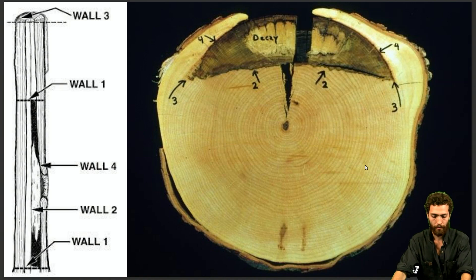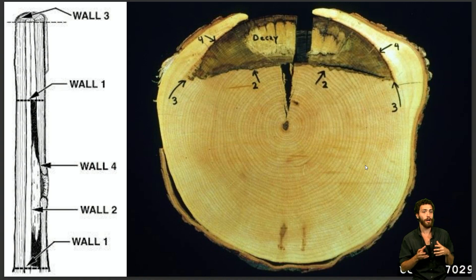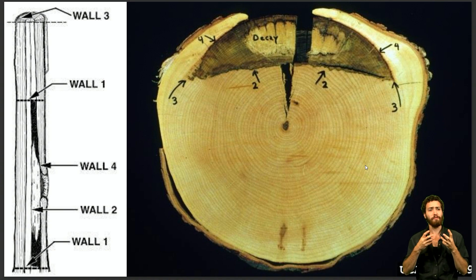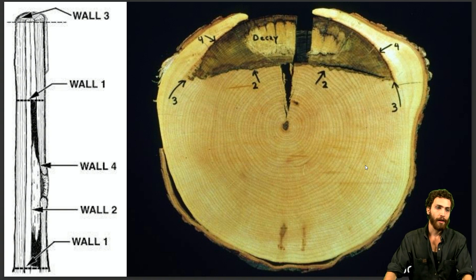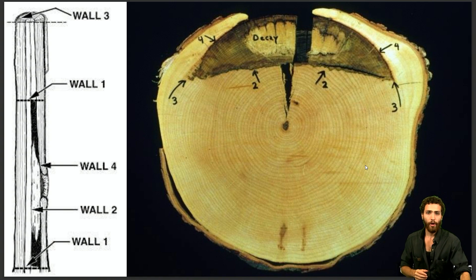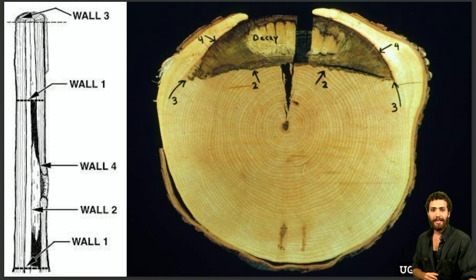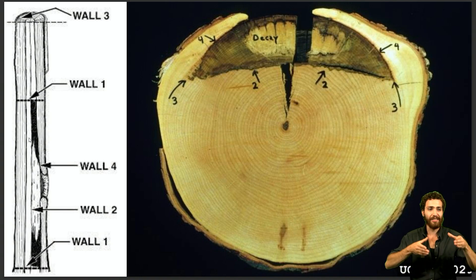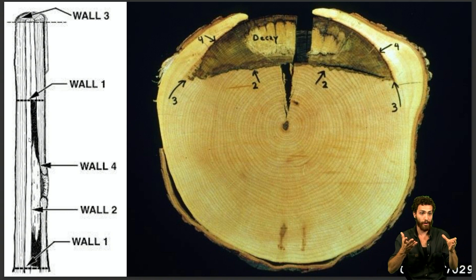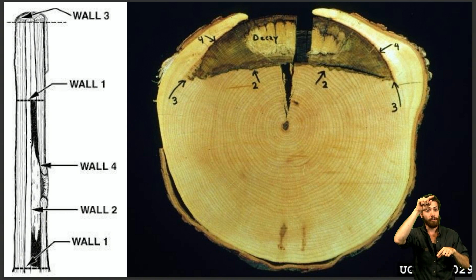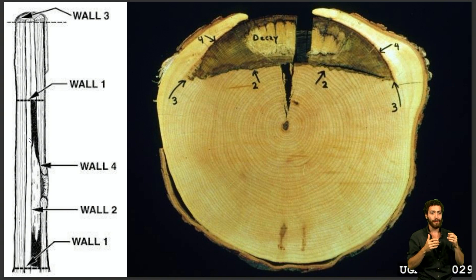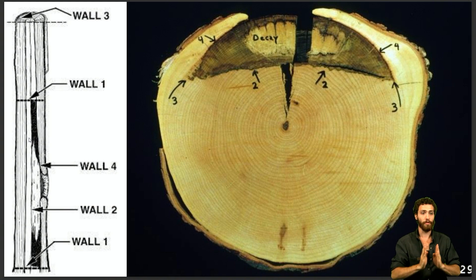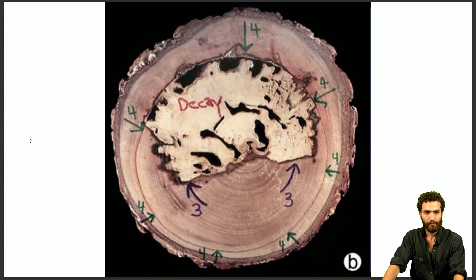Walls two and three will often fail slowly. Some trees are very strong compartmentalizers, while others are known for having walls that very frequently fail. Wall one is the easiest to fail, which is why decay typically stretches much further vertically than it does horizontally. Decay is often confined to a narrow space inside the trunk but stretches very far vertically up and down, because wall one very typically fails and the fungus can move up and down but is bordered from moving out laterally.